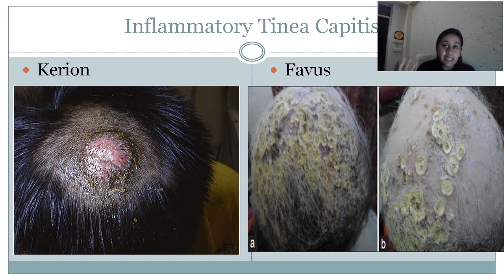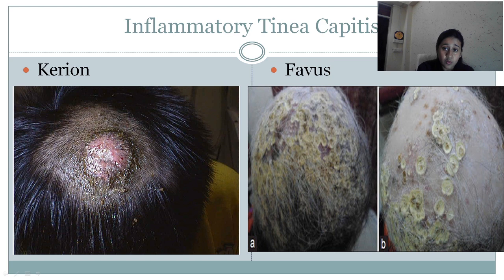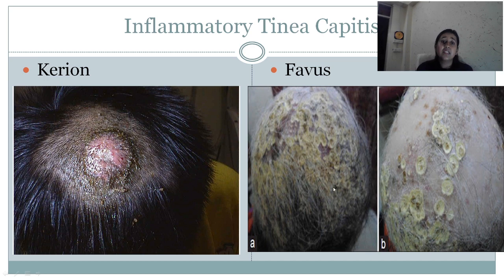Next is inflammatory tinea capitis. Tinea capitis is divided into inflammatory and non-inflammatory types. In non-inflammatory type we have grey patch and black dot. In inflammatory type we have kerion and favus. Kerion presents as a boggy swelling over the scalp with associated hair fall and there may be discharge of pus in some cases. Favus shows yellow-colored cup-like structures called scutula. This type of inflammatory tinea capitis is usually seen in immunocompromised individuals.